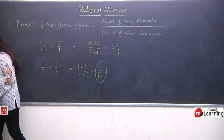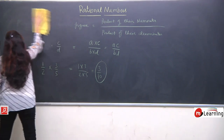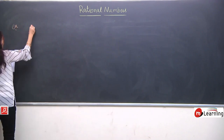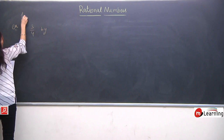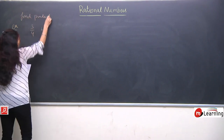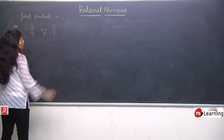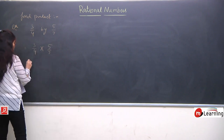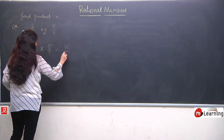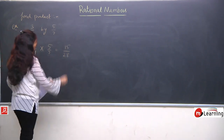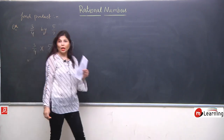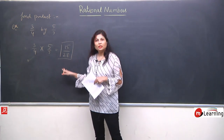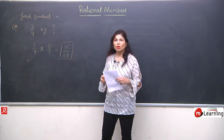We'll do a few examples. First: find the product of 3/4 and 5/7. Numerator multiplies numerator: 3×5 = 15. Denominator multiplies denominator: 4×7 = 28. So the answer is 15/28. We check if it converts to lowest form — here it does not, so this is the final answer. Always check whether the answer can be simplified further.